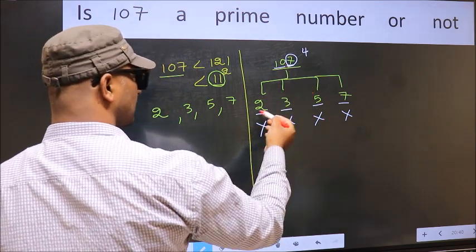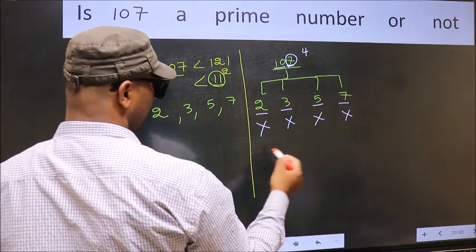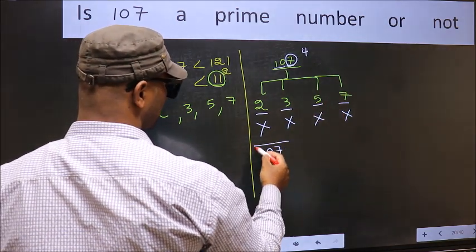So 107 is not divisible by any of these numbers. Hence, 107 is a prime number.